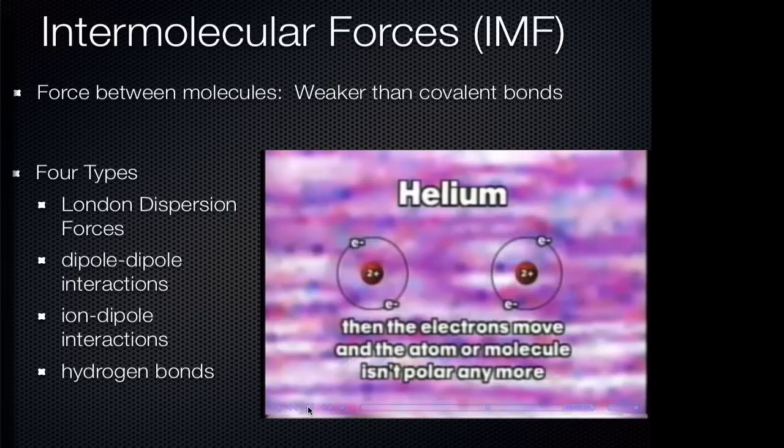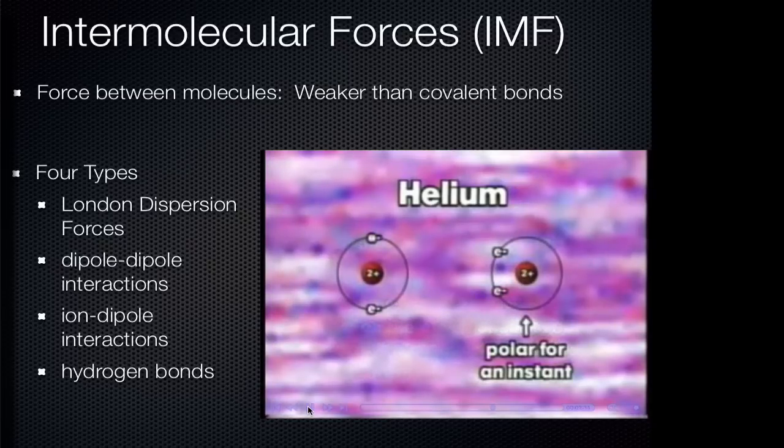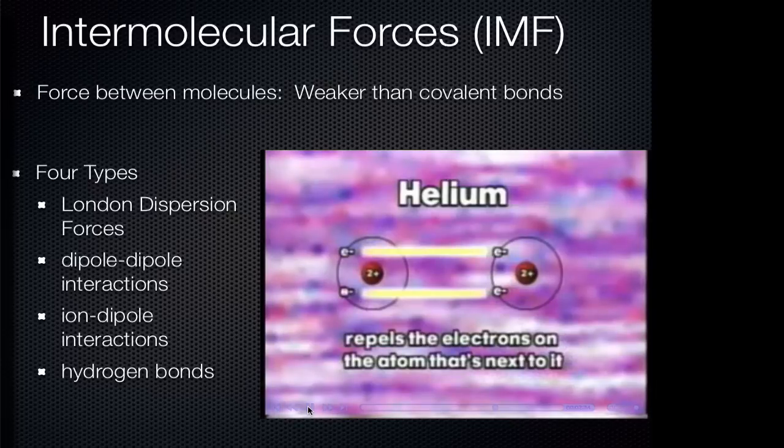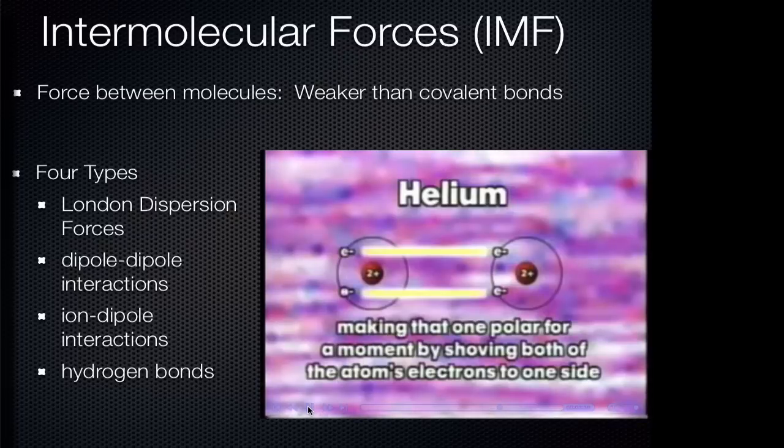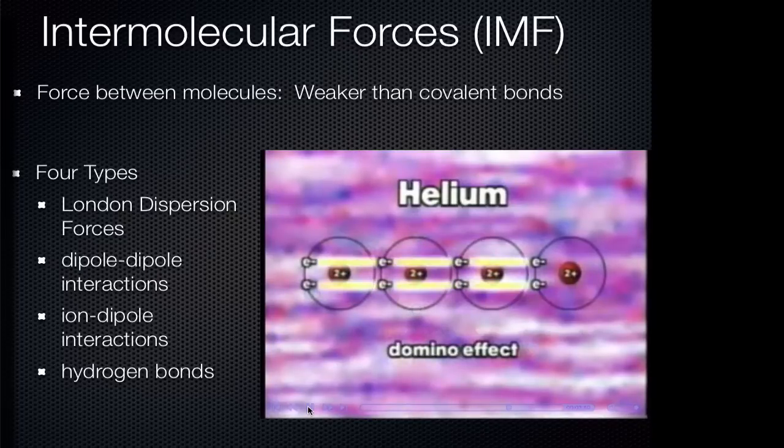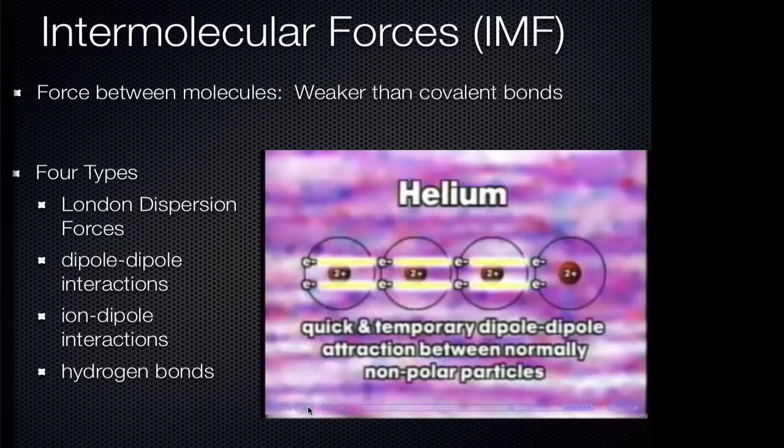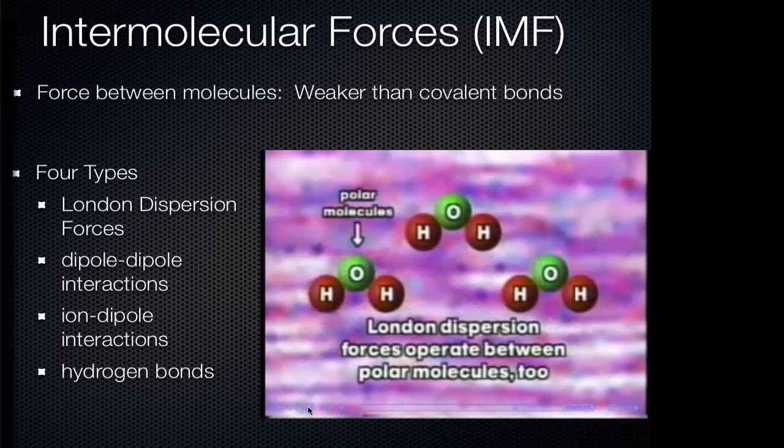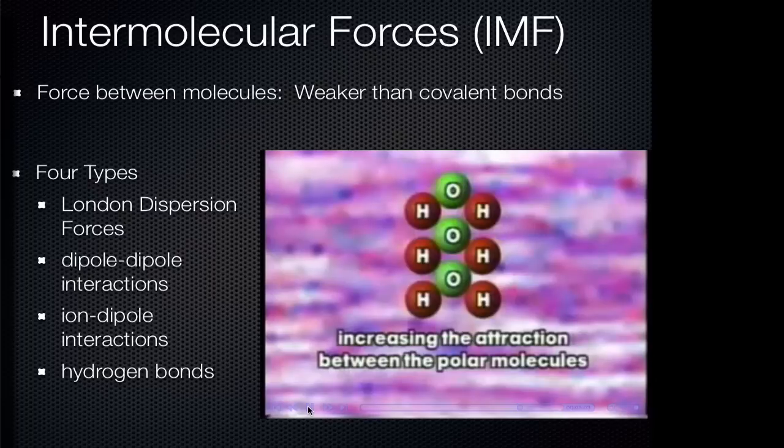Fritz London figured that even non-polar atoms like helium might sometimes have both their electrons on one side of the nucleus for just an instant. He called this coincidence instantaneous dipole movement. For just an instant a normally non-polar atom or molecule is polar, then the electrons move and the atom or molecule isn't polar anymore. But when one atom becomes polar for an instant, the force of its electrons on one side repels the electrons on the atom that's next to it, making that one polar for a moment. This can continue in a domino effect until a whole bunch of atoms are polar for an instant. London dispersion forces operate between polar molecules too, increasing the attraction between the polar molecules.